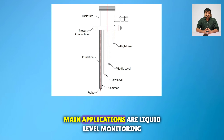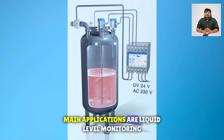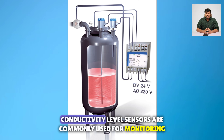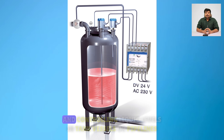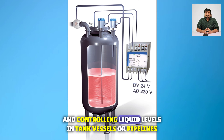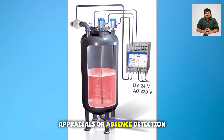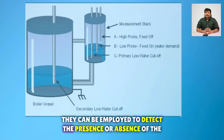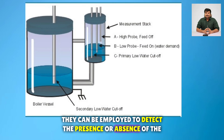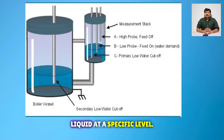The main applications include liquid level monitoring — conductivity level sensors are commonly used for monitoring and controlling liquid levels in tanks, vessels, or pipelines. They can also be employed for presence or absence detection, to detect whether a liquid is present or absent at a specific level.